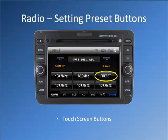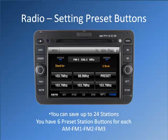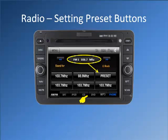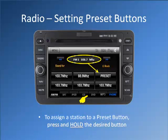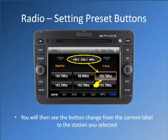Touch screen buttons. You can save up to 24 stations. You have 6 preset station buttons for each AM, FM1, FM2, and FM3. To assign a station to a preset button, press and hold the desired button. You will then see the button change from the current label to the station you selected.